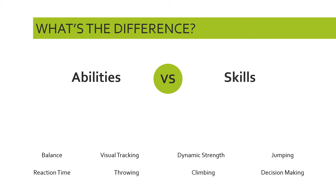We would typically acknowledge that balance is innate — it's something that people tend to be better or poorer at by virtue of their physical body. So we would put balance on the side of ability. That's not to say you can't improve or work on that innate ability and make it better, but balance itself in its purest sense can be thought of as an ability.